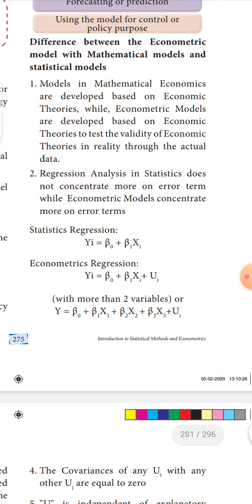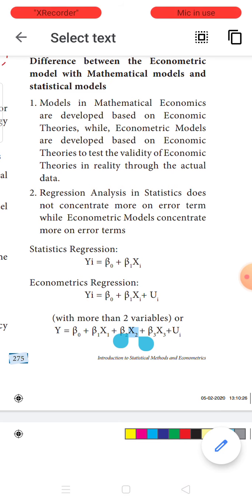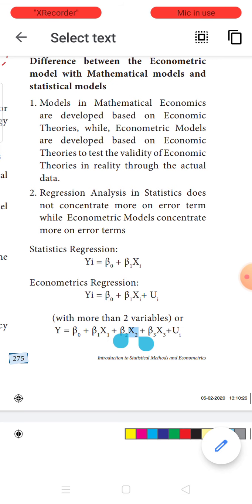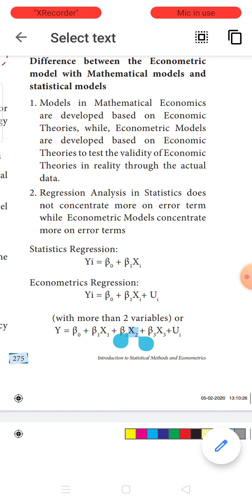What is the difference between an econometric model, mathematical model, and statistical model? Mathematical models are based on economic theories — for example, the law of demand and law of supply. Based on these, tables are made as mathematical models. Economic models are also developed based on economic theories, not on mathematical models, and the validity of the economic theory is verified through actual data.